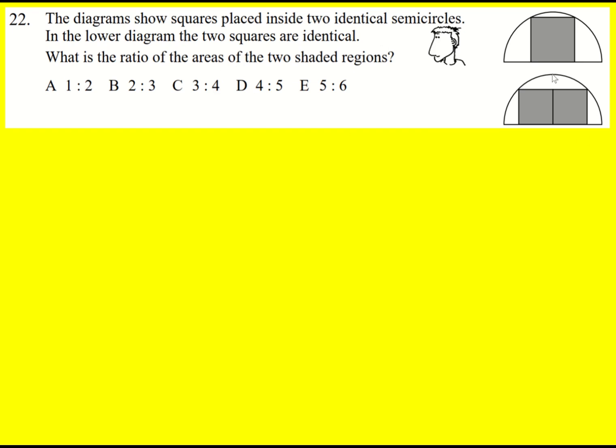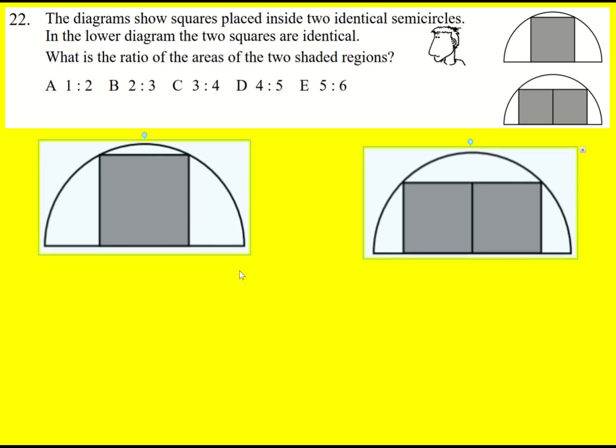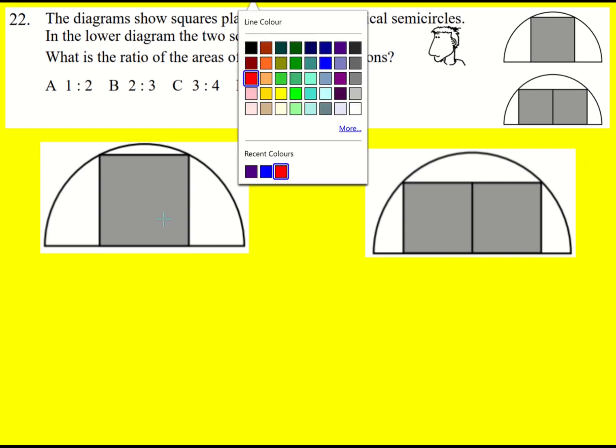We're asked to find the ratio of the areas for two shaded regions in these identical semicircles, so let's deal with them one at a time. A good idea in circle questions such as this is to try to get the radius involved.